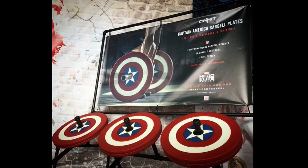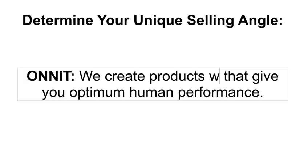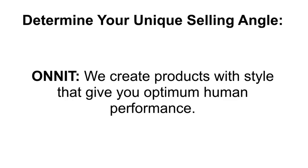What is Onnit's unique angle? According to them, it's: we create products that give you optimum human performance. If it were up to me to rewrite this based on where I see them going, I would change it to: we create products with style that give you optimum human performance.